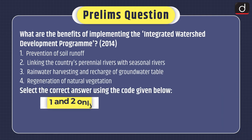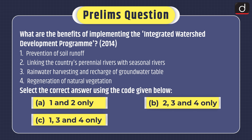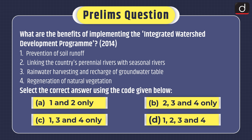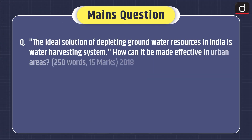Now it's time for the practice questions. First, a prelims question asked in the 2014 exam: What are the benefits of implementing the Integrated Watershed Development Program? 1. Prevention of soil runoff. 2. Linking the country's perennial rivers with seasonal rivers. 3. Rainwater harvesting and recharge of groundwater table. 4. Regeneration of natural vegetation. Select the correct answer: (a) 1 and 2 only, (b) 2, 3 and 4 only, (c) 1, 3 and 4 only, or (d) 1, 2, 3 and 4. You can send the answer in the comment section. The main question from the 2018 exam: The ideal solution of depleting groundwater resources in India is a water harvesting system — how can it be made effective in urban areas?